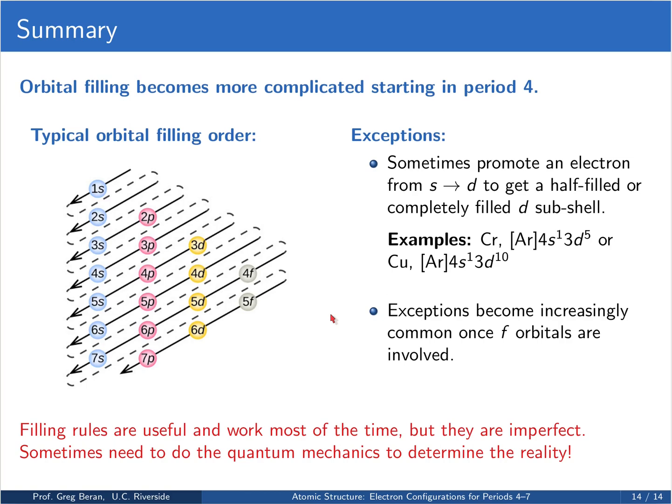So again, just to reiterate, it's important to remember that these rules are useful rules of thumb that work most of the time, but they are imperfect. Sometimes you actually need to do the quantum mechanics to determine the reality of the electron configuration for a given element.